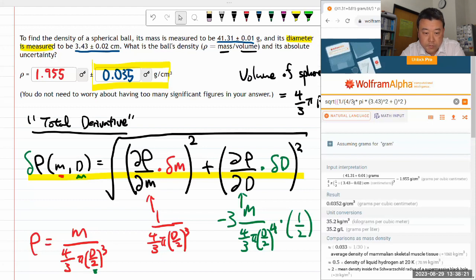Actually, I shouldn't skip the unit because it's going to reveal if I made any mistakes. That's the derivative, now multiply that with the uncertainty in mass: 0.01 gram.